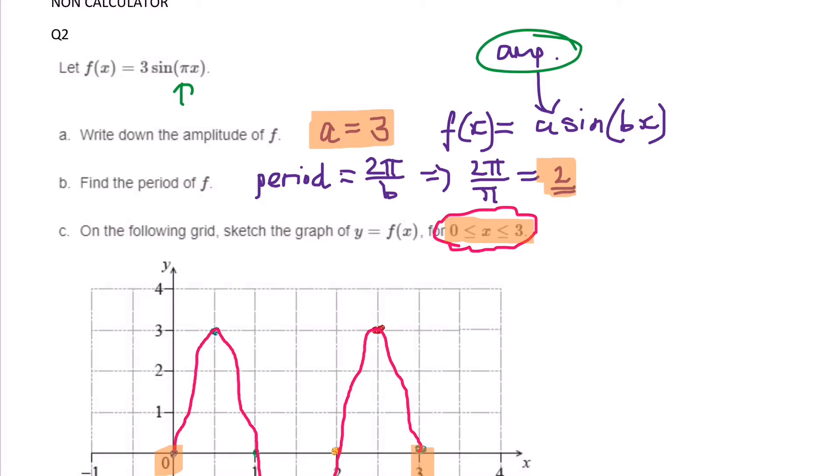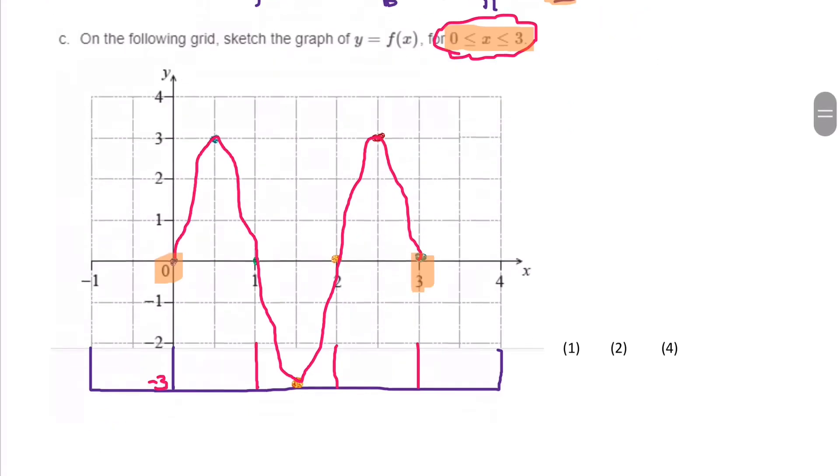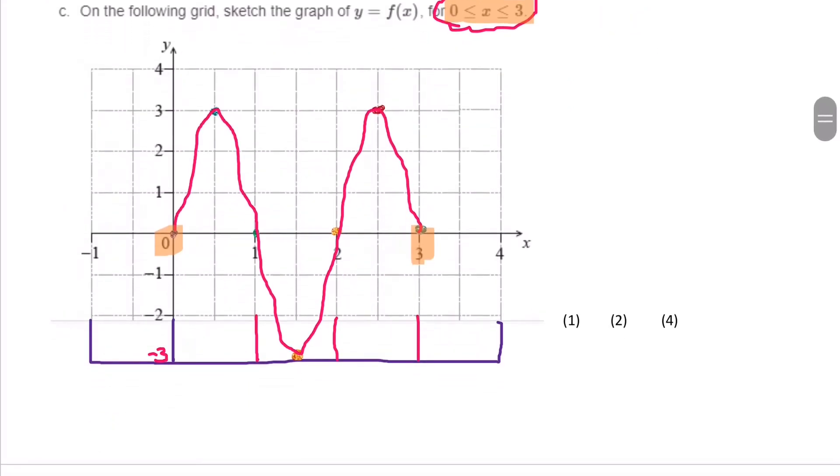Then on to C, it's a 4 mark question. But if you don't look at the domain, you can lose marks. So I've emphasized in orange what the domain is: it's 0 and 3. And I've drawn my graph precisely to that. So you can see here that it starts at 0, goes up to 3, all the way down to negative 3, and then back up to 2, which is one cycle because I calculated that in part B. And then I kept going to 3 because that's the domain.